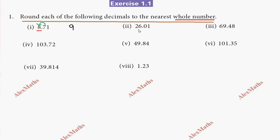Now let's round off. The number is 26.01. We need to round this off. On the right side there is a 0. Since 0 is there, the value stays the same — round off to 26.